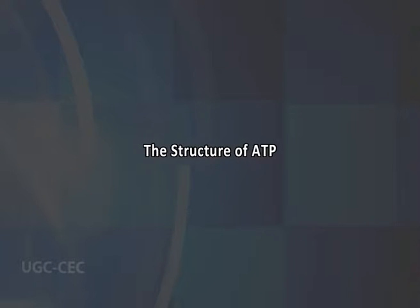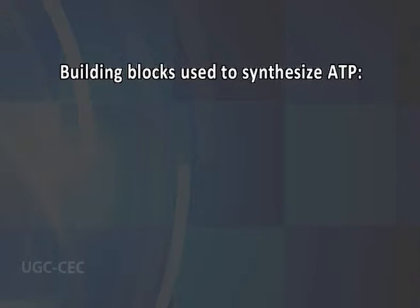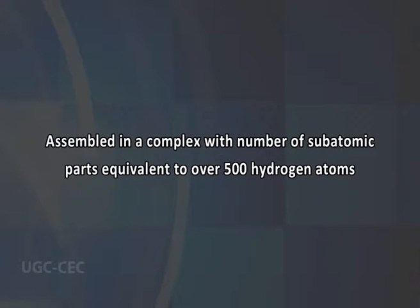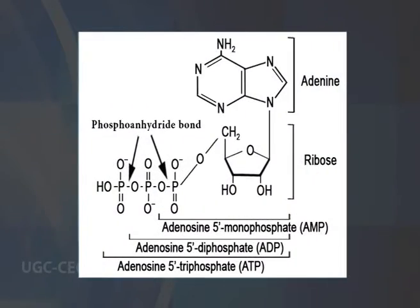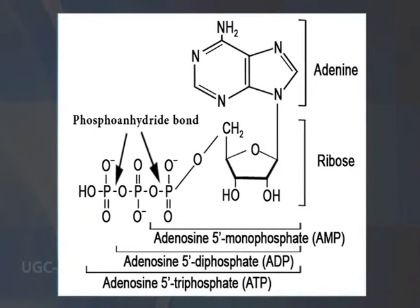Let's start with the structure of ATP. ATP contains the purine base adenine and the sugar ribose, which together form the nucleoside adenosine. The basic building blocks used to synthesize ATP are carbon, hydrogen, nitrogen, oxygen, and phosphorus, assembled in a complex containing the number of subatomic particles equivalent to over 500 hydrogen atoms. One phosphate ester bond and two phosphate anhydride bonds hold the three phosphates and the ribose together.